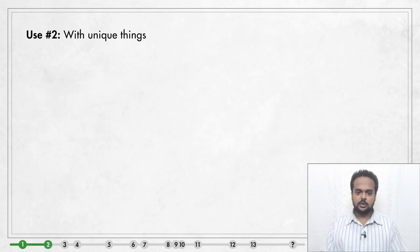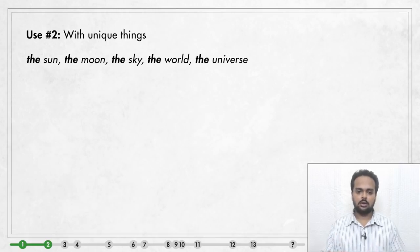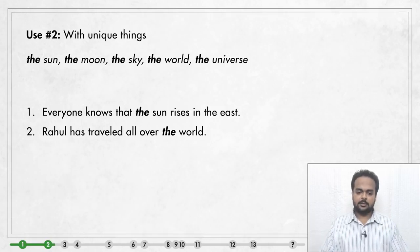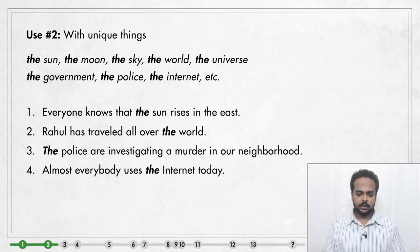Use number two: use 'the' with unique things — where there's only one of something. For example, we say 'the sun' because there's only one sun. Similarly: the moon, the sky, the world, the universe. For example: 'Everyone knows that the sun rises in the east' and 'Rahul has traveled all over the world.' Some other things we consider unique: the government, the police, the internet — as in 'The police are investigating a murder in our neighborhood' and 'Almost everybody uses the internet today.'